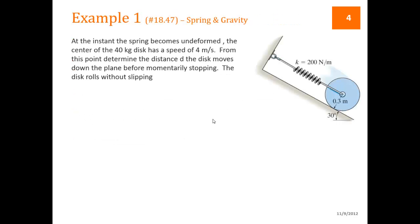So let's take a look at a couple of examples of this. In this first example we have a wheel that rolls down a hill that's connected to a spring. Initially, the spring is unstretched, undeformed, and the center of this disc is moving at a speed of 4 meters per second. From this point then the disc rolls down the hill and eventually stops moving. And the question is, how far does it move down the hill before this happens?